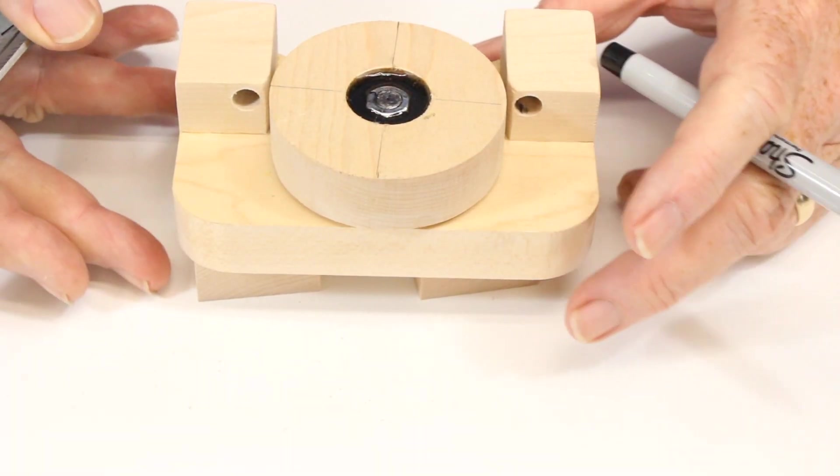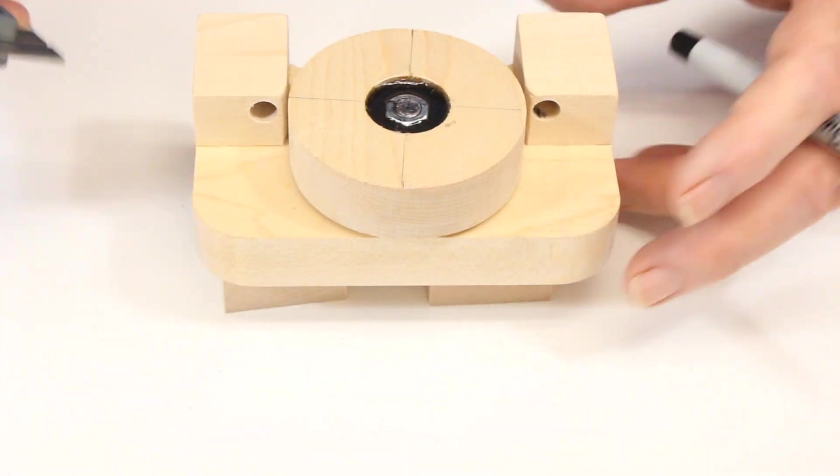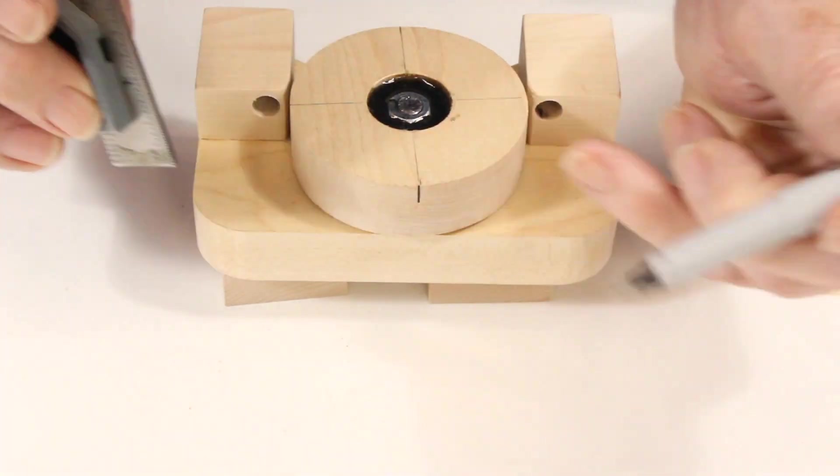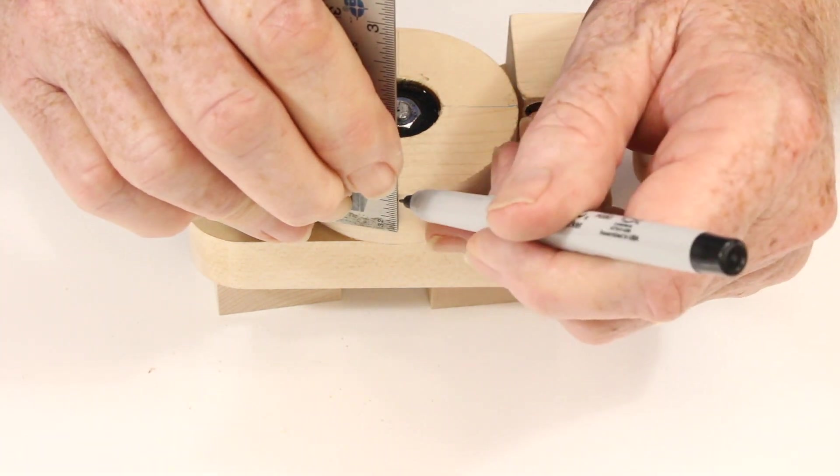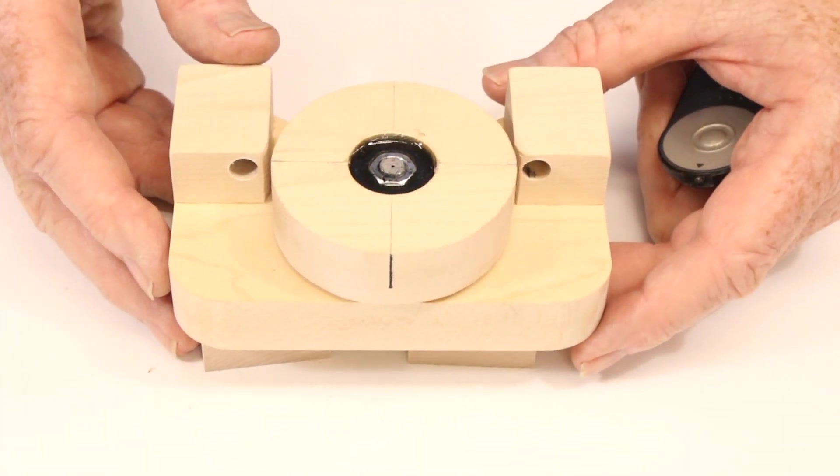In order to locate the jig at the center mark on your workpiece, we need to extend crosshair marks out to the edges of the wheel. Align these marks with the centering lines on your workpiece.